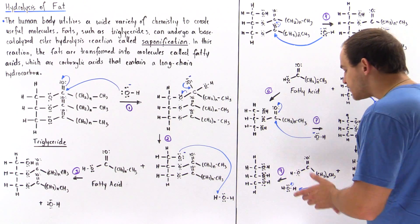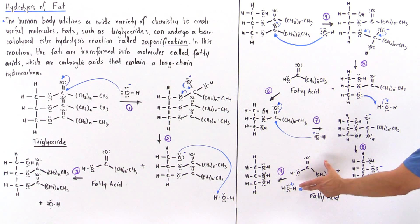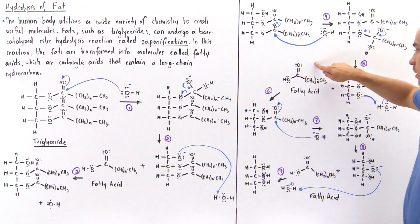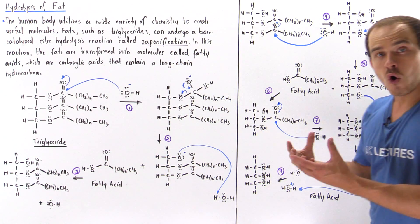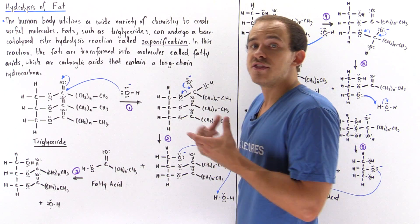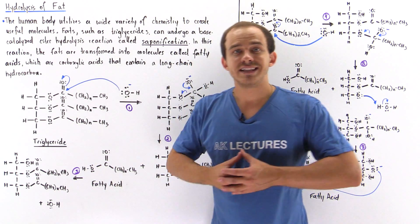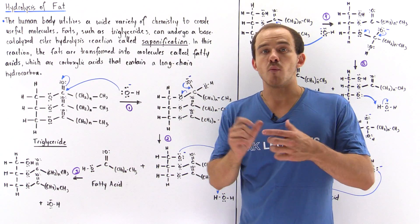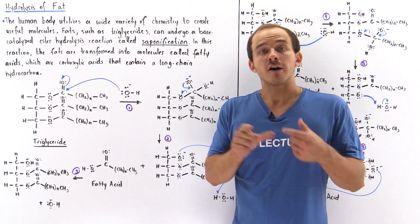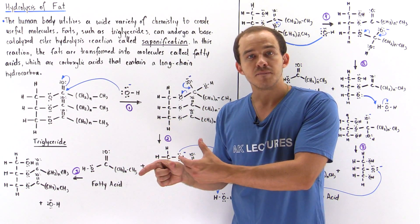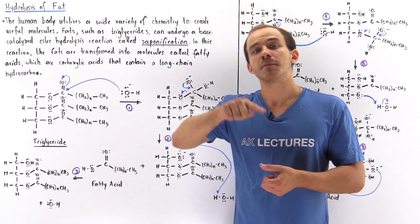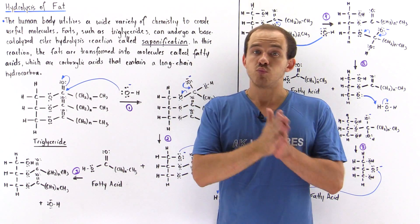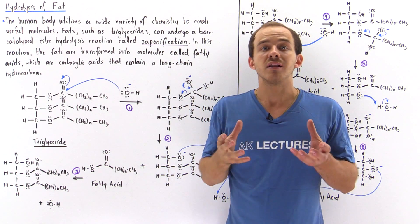Once three carboxylic fatty acids are formed, these fatty acids are further broken down into acetyl coenzyme A — smaller molecules — which are fed into the Krebs cycle. Within the Krebs cycle they are broken down even further into carbon dioxide, water, and energy.